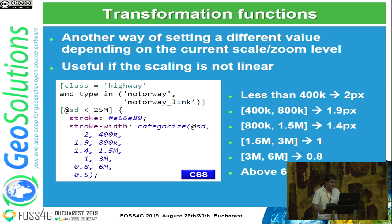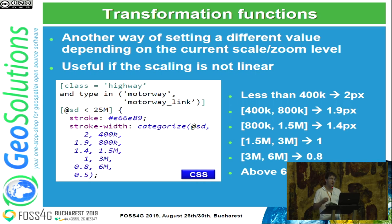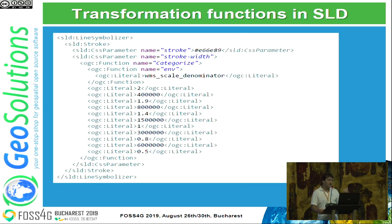There are transformation functions to express scale-varying widths, rotations, or any numeric value. In CSS you can use a categorized function on the scale denominator — for example, below 400,000 it's two pixels, below 800k it's 1.9, and so on. This is needed for OpenStreetMap rendering because road widths vary between scales in a non-linear way: going linear causes roads to interfere with buildings. The same style in SLD uses the same categorized approach but without the compact number notation.